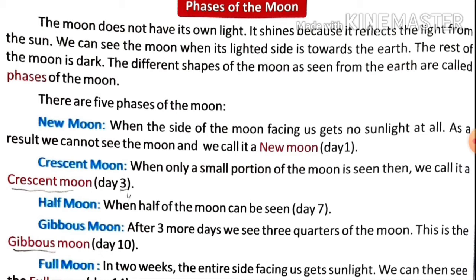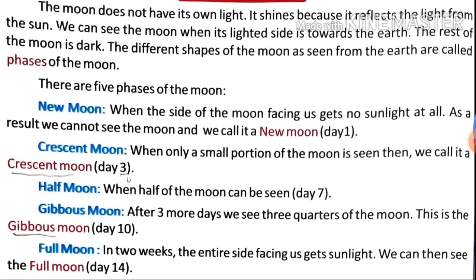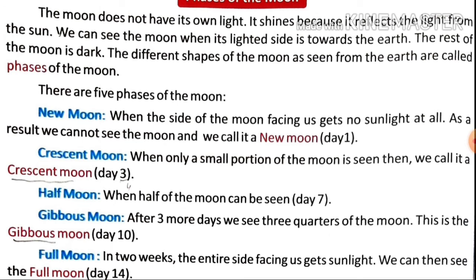We can see the Moon when its lighted side is towards the Earth — only when its lighted side faces the Earth can we see the Moon. The rest of the Moon is dark. The different shapes of the Moon as seen from the Earth are called phases of the Moon. The Moon has no light of its own; it reflects sunlight, and only the lighted portion facing Earth is visible.